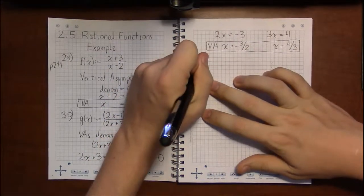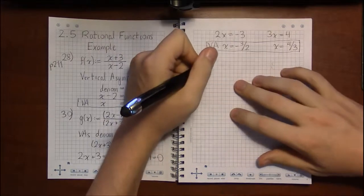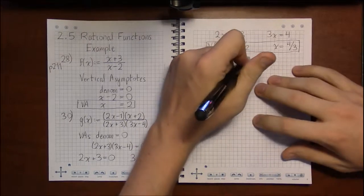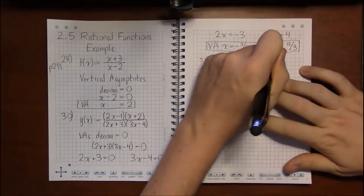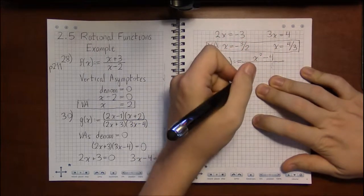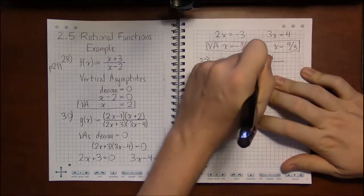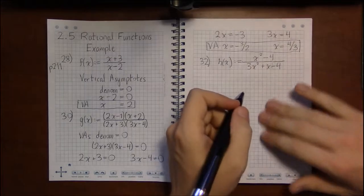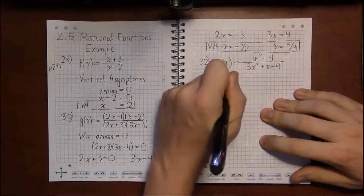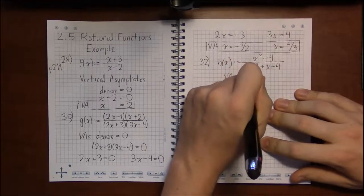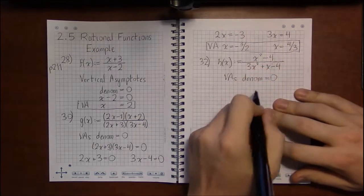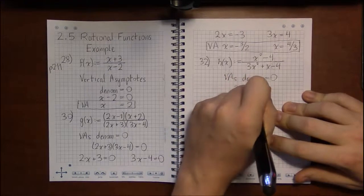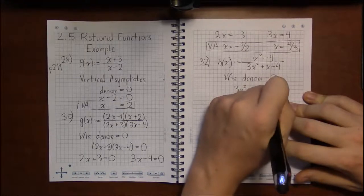Let's take a look at problem 32 as well. Now, on 32, we have h of x being defined as x squared minus 4 over 3x squared plus x minus 4. Looking for vertical asymptotes, we're going to start by setting the denominator equal to zero, because that's where vertical asymptotes occur.